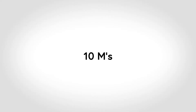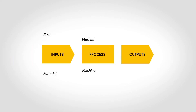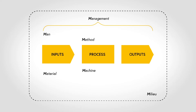To think about processes in terms of the four M's is a very useful exercise, but of course we need more in order to deliver products and services. To move things in the process we need to manage the process — hence we need management. The process always takes place somewhere, and we can call that milieu. The inputs come from mother nature and the output goes to a market. In order to move stuff in the process we need some kind of energy or motion. And finally, to establish the production system in the first place, we need money.